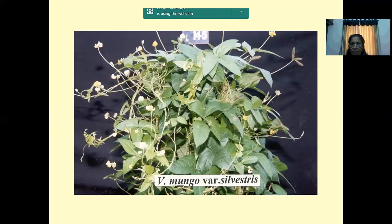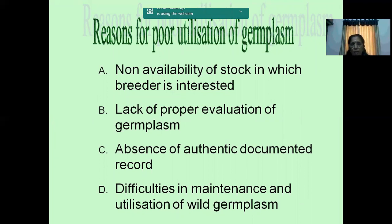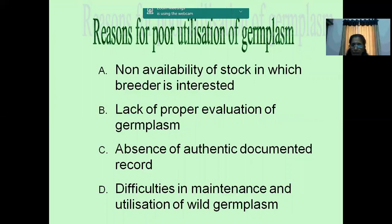Why is the utilization of germplasm poor? Because of the non-availability of germplasm for interested breeders, lack of proper evaluation of the germplasm - all the germplasm are not being properly evaluated or documented - and another main issue is difficulty in maintaining wild germplasm, because each wild species has its own nature and shows the capacity to live in the ex-situ way, so we have difficulty in maintaining wild germplasm.